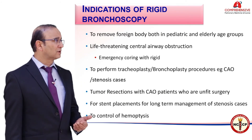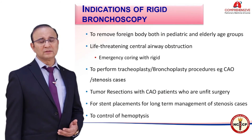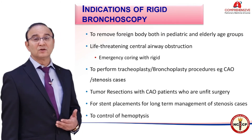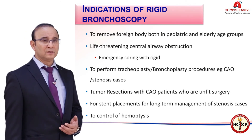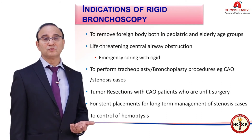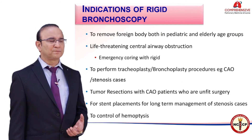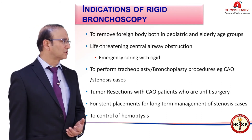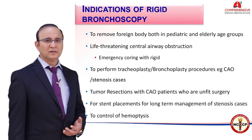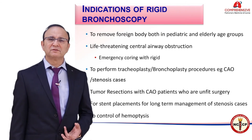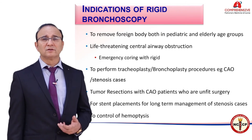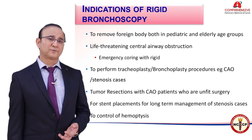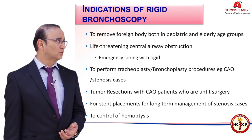Rigid bronchoscopy is used for tumor resection with central airway obstruction in patients unfit for surgery. It is also used for stent replacements for long-term management of stenosis patients, and of course for a patient with massive hemoptysis that cannot be controlled with any other scope.